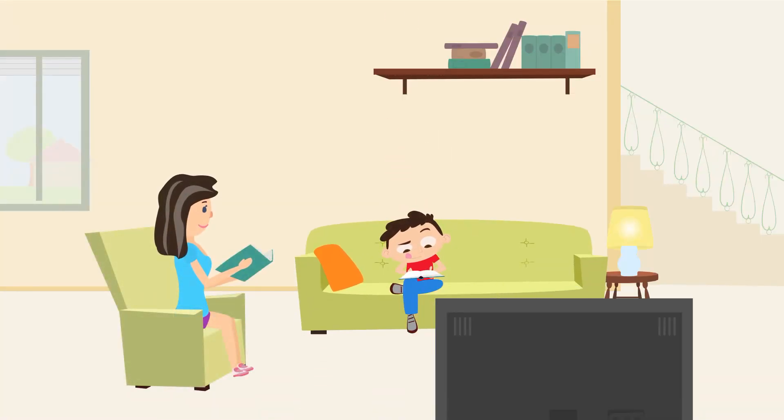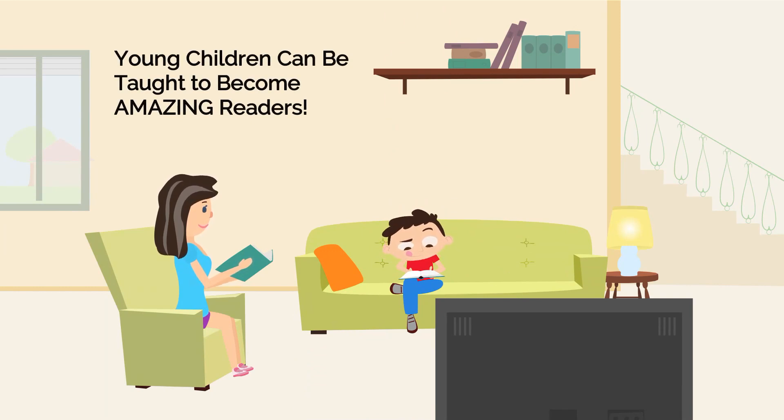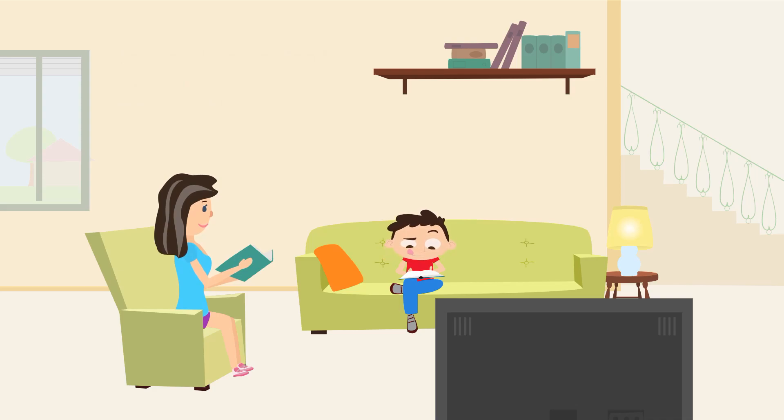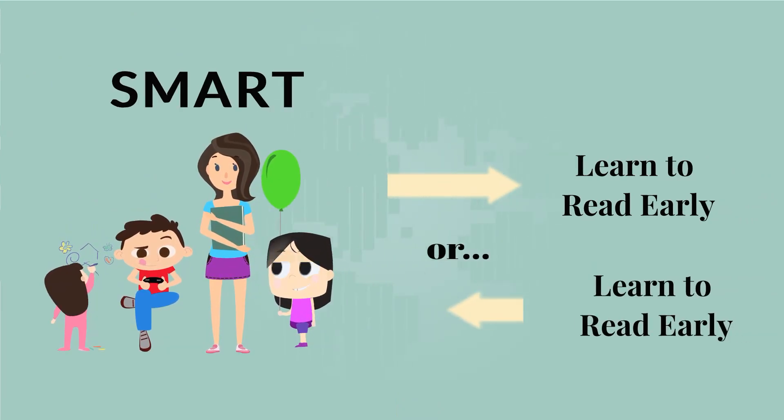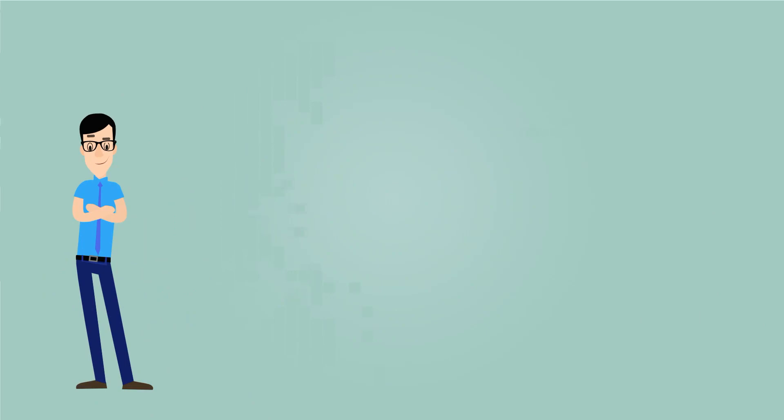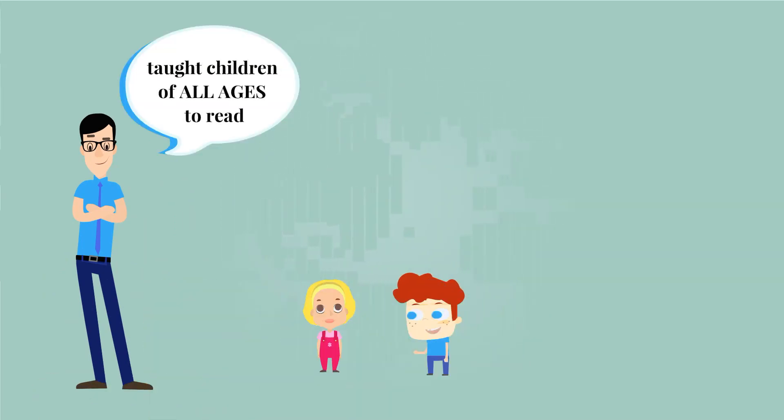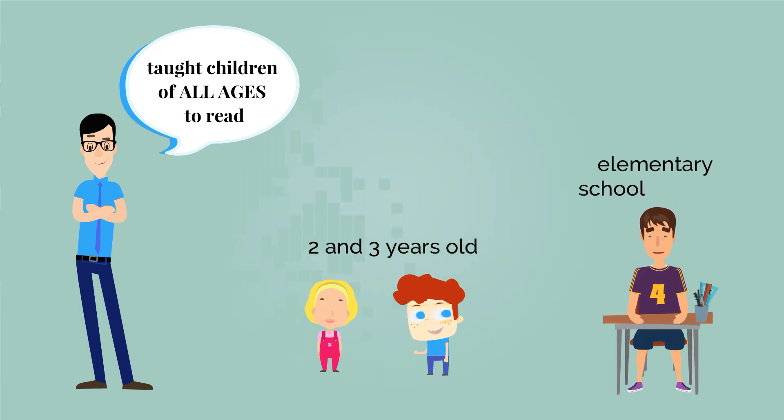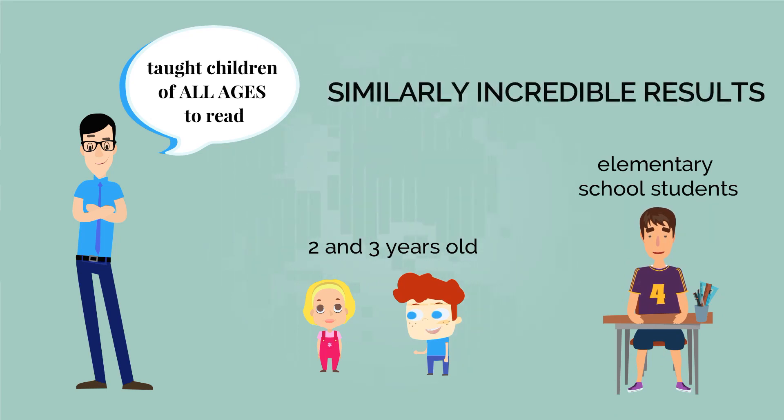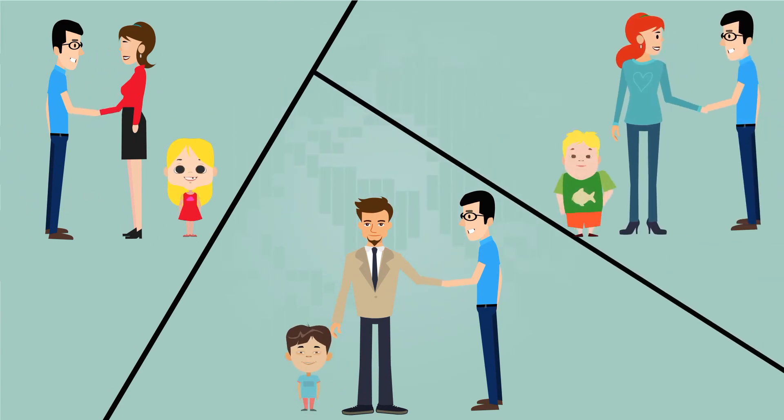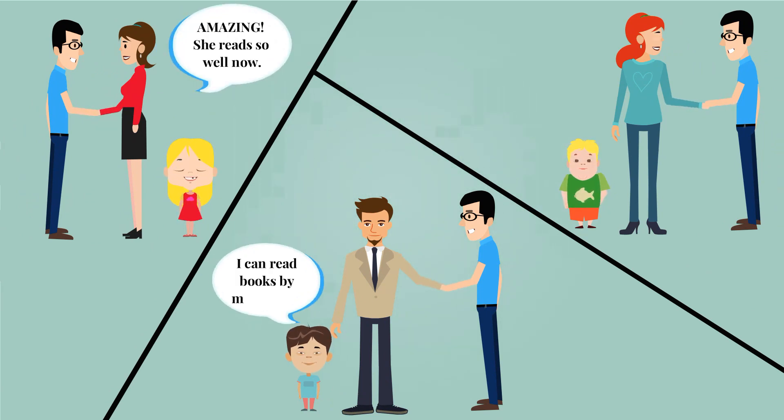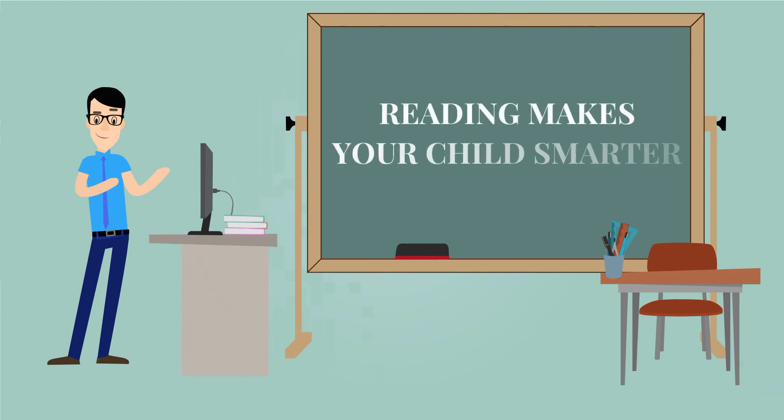I can even show you some videos of Rain and Ethan reading some college-level textbooks at just six years old. But that would probably just make you yawn. I know what you must be thinking. That guy must have smart kids. Do smart kids learn to read early? Or does learning to read early make kids smarter? I can tell you right now that I have taught children of all ages to read, many as young as two or three years old. Others are older elementary school students and they've all progressed to achieve similarly incredible results. The fact of the matter is, reading makes your child smarter.